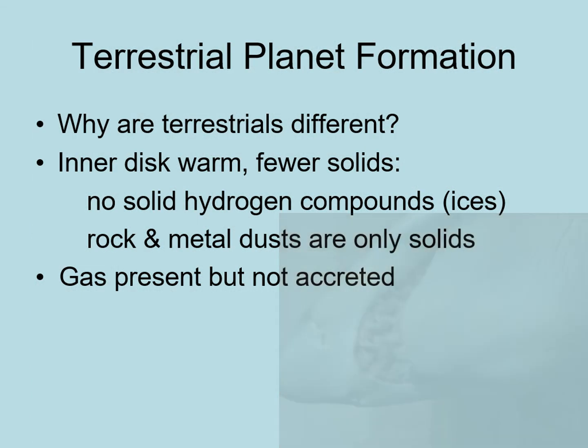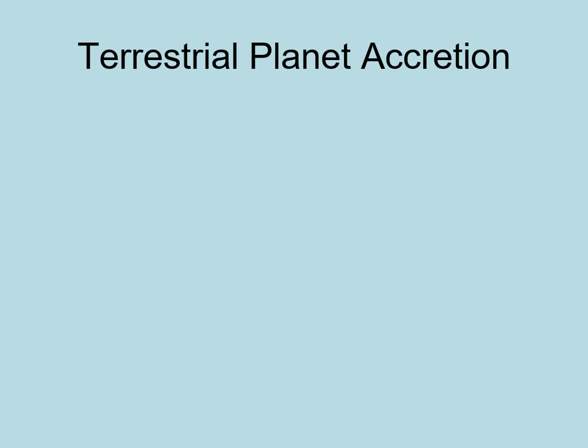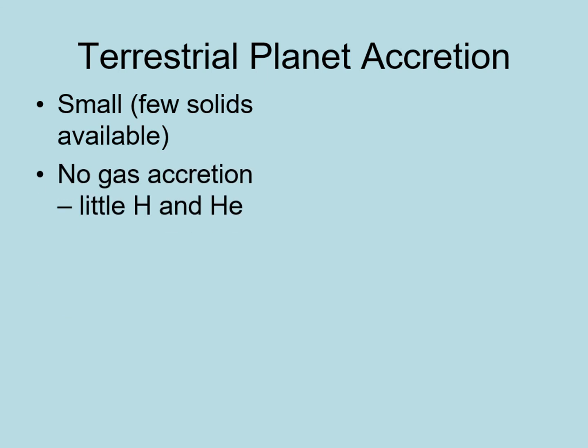Similarly, there was plenty of gas in the inner solar system during the early phases of planet formation. However, not very much of this gas was accreted. The solid material in the inner solar system goes through solid body accretion just like described earlier, but since there isn't any solid ice in the inner solar system, there's a lot less raw material to work with. So the planets that accrete are much smaller — in fact, so much smaller that they accrete little or no gas from the disk. This is why terrestrial planets have almost no hydrogen and helium the way outer solar system planets do.